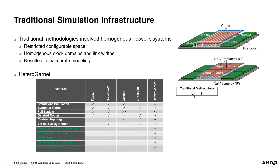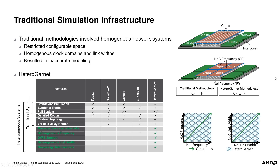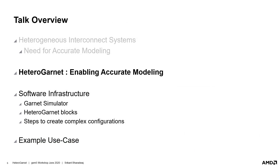This is where Heterogarnet comes to the rescue. It adds support for heterogeneous routers, links, and multi-frequency domain crossings, link widths, and several other features to the widely popular Garnet network model. For our example of 2.5D integrated architecture, Heterogarnet would allow tuning the interposer clock domain individually, thereby enabling accurate modeling. I will briefly describe the key features of Heterogarnet before deep diving into the software infrastructure of Garnet as well as Heterogarnet.